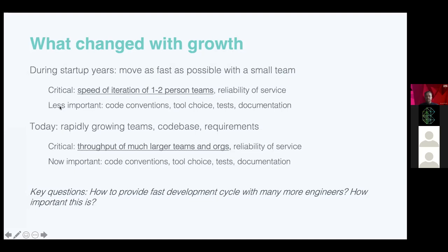So how are we adjusting to a new reality of being a much larger and rapidly growing Erlang team? A key observation is that things that didn't matter at smaller scale began to matter. When we were a smaller team, conventions and tools were absorbed by following examples in the existing system. We never had to argue about tabs versus spaces, choice of build tool, or how to write tests. How do you provide a fast development cycle with many more engineers? Not only does this make the organization more efficient, but engineers tend to be happier when things work fast.